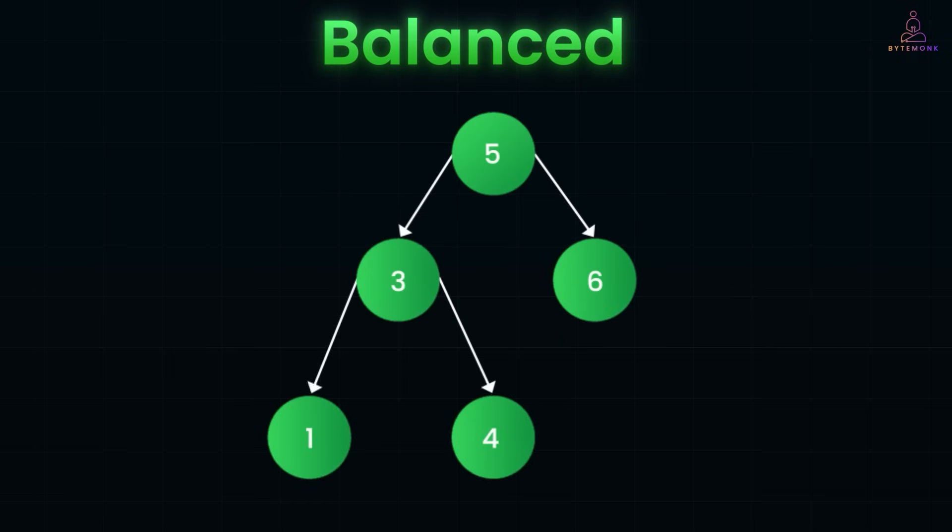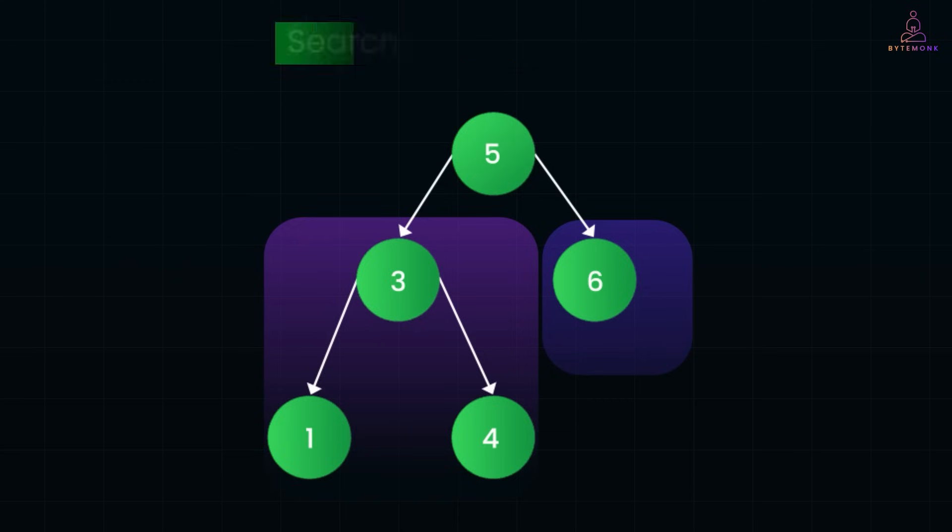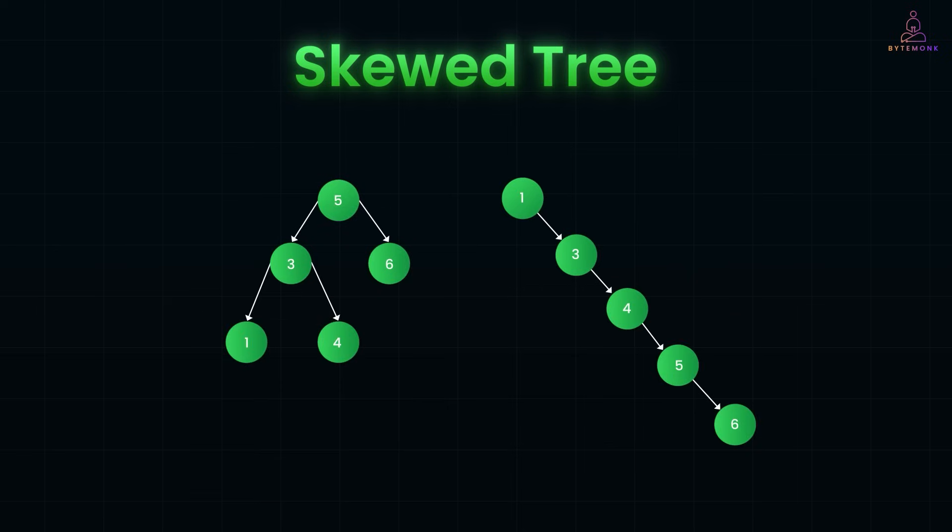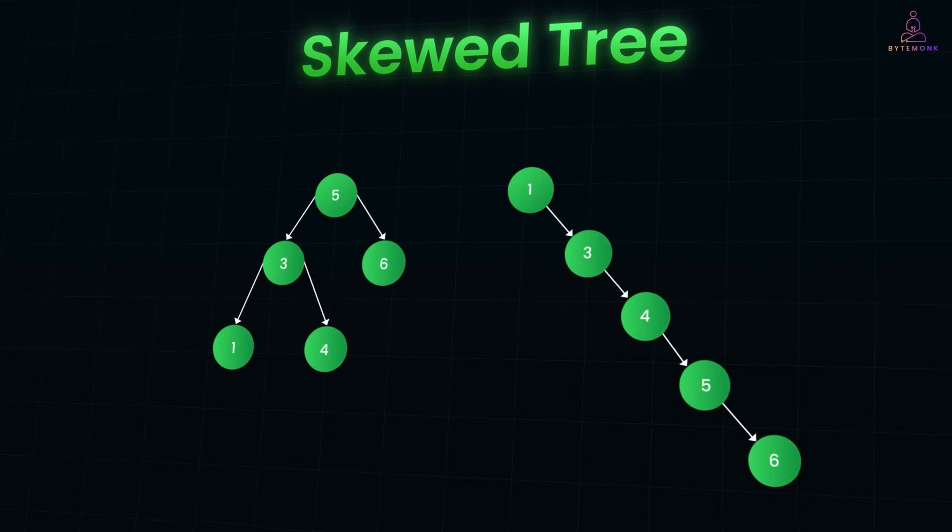A tree is considered balanced if the heights of its left and right subtrees are roughly equal, typically differing by no more than one at any node. Why does this matter? Because in a balanced tree, operations like search, insert, and delete take O(log n) time. But if the tree becomes skewed, like a chain going all left or all right, those operations degrade to O(n). So, keeping a tree balanced isn't just about symmetry, it's about maintaining efficiency.